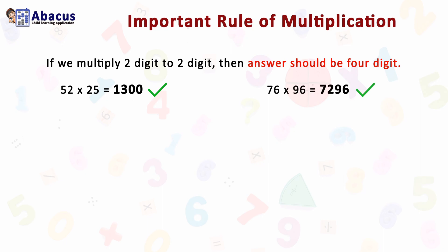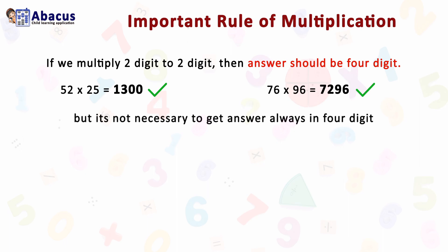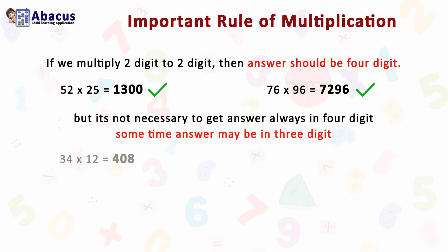Another example: 76 multiplied by 96 equals 7296, which is also in four digits. But it's not always necessary to get the answer in four digits. Sometimes the answer may be in three digits. For example, 34 multiplied by 12 equals 408, which is in three digits.